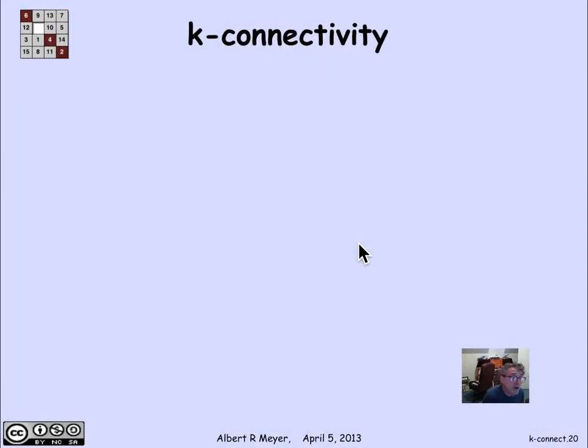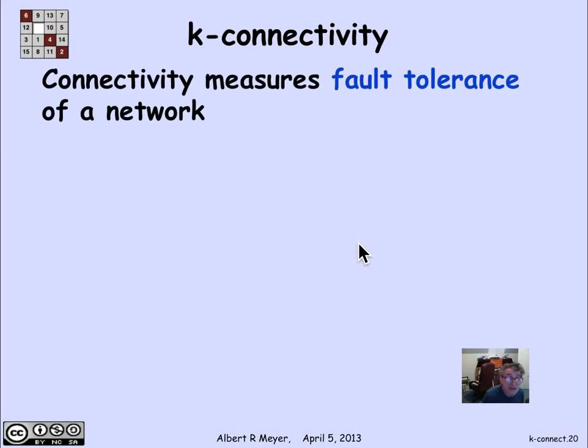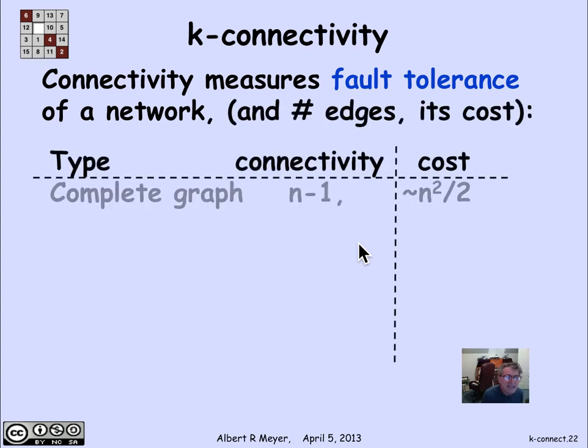To summarize about some graphs that we know about: given that connectivity measures fault tolerance in a network, we're interested in how many edges it takes to achieve this level of connectivity. The number of edges is a measure of the cost. The complete graph on n vertices is n minus 1 connected, but it has about n squared over 2 edges.